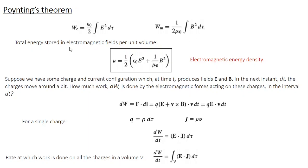So the total energy stored in the electromagnetic field per unit volume is the electrostatic energy plus the magnetostatic energy. The energy density u is given by one half epsilon naught E squared plus 1 over mu naught B squared. This is the energy density. When you take the volume integral of the energy density you get the corresponding total energy.